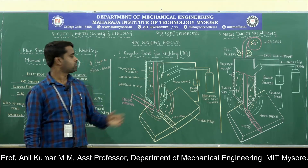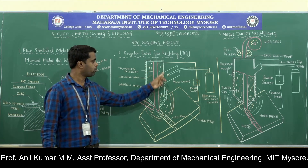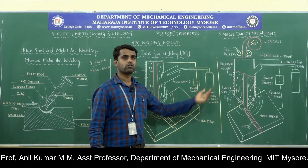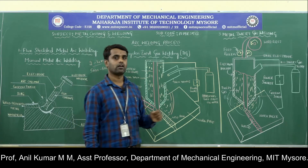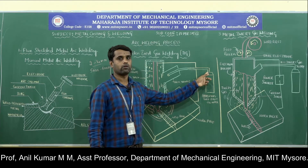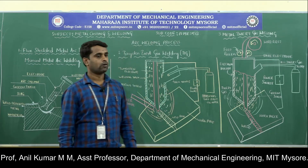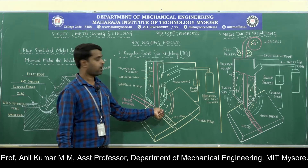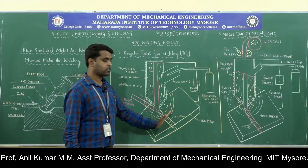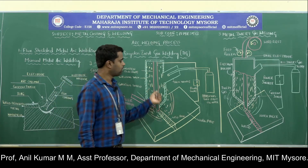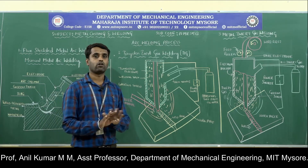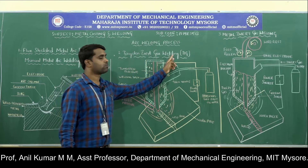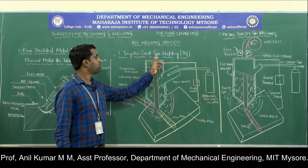In the TIG welding process, a welding torch is used with a small opening through which inert gases are supplied. The commonly used inert gases are helium or argon, stored in a cylinder with a separate pressure regulator and flow meter to control flow and pressure. The tip of the welding torch acts like a nozzle through which inert gases are supplied to the welding area. A non-consumable tungsten electrode is used — the electrode is not melted; it only stabilizes the electric arc.